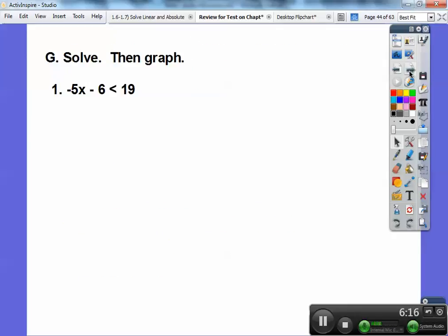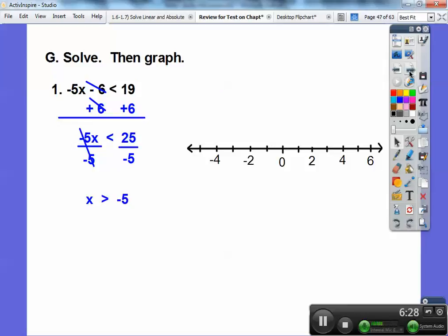Solve, then graph. -5x - 6 less than 19. Treat this just like an equal sign. So I'm going to go ahead and add 6 to both sides, and I get 25 over there, and then divide by negative. Watch out, when you divide by negative, it flips the inequality in the other direction. There's my algebra answer. Open circle here at -5, and shaded that way. So there's my graph answer right there.